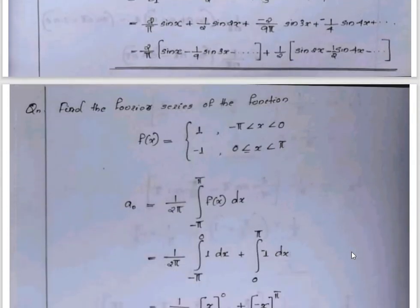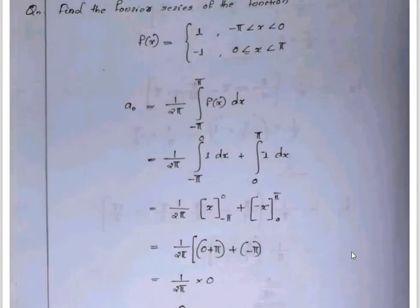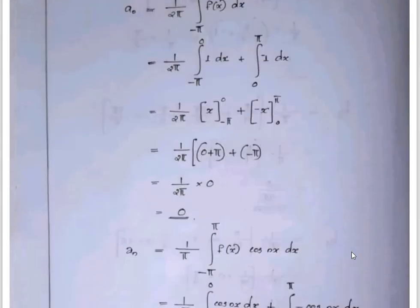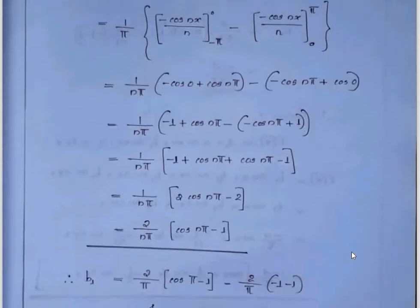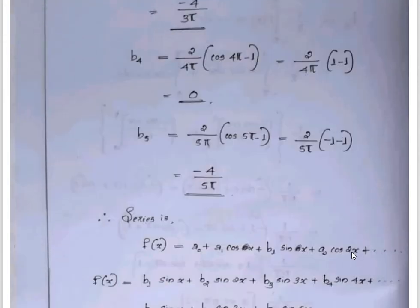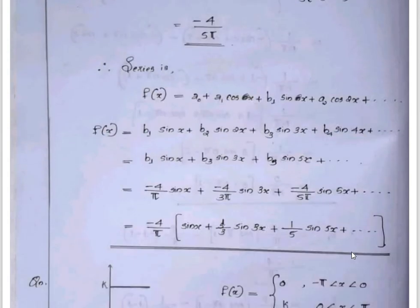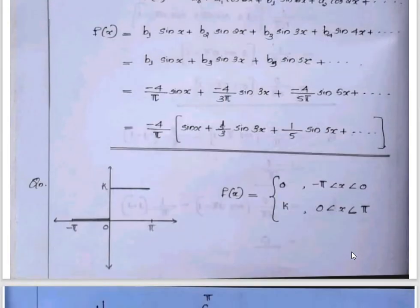Next problem: f of x equals 1 for minus π less than x less than 0, and minus 1 for 0 less than x less than π. Computing a0 and bn: we get 2 over n times cos nπ minus 1, giving values b1, b2, etc. Substitute to get the Fourier series.